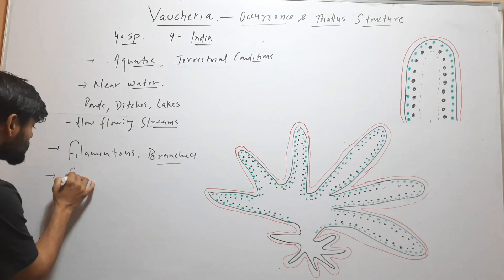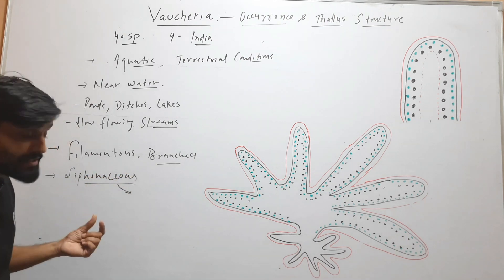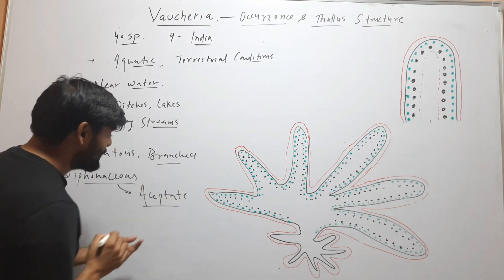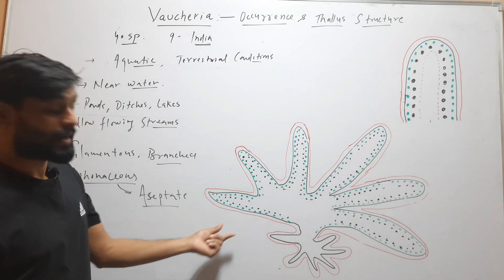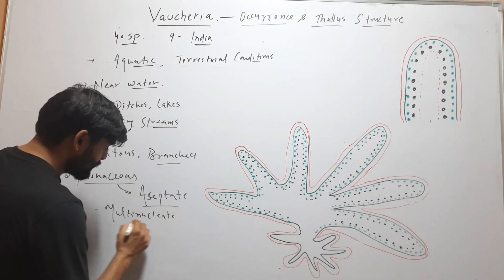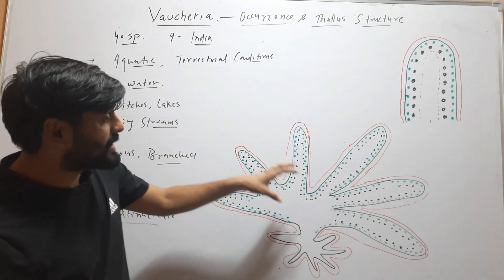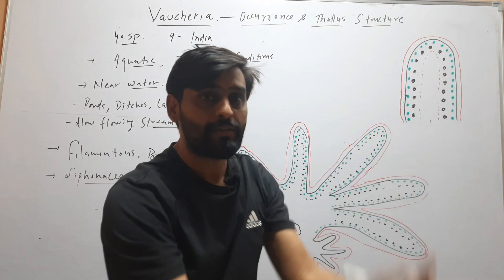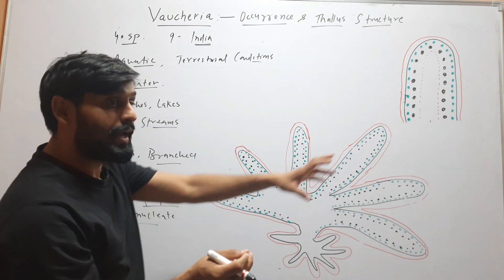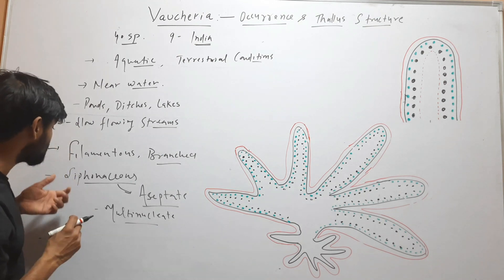This thallus is also called siphoneous. Siphoneous means an aseptate thallus — here you can see there is no septa. It is also multi-nucleate, meaning there are many nuclei in a single filament. So it is a multi-nucleate and aseptate filament, and this type of structure is called siphoneous.